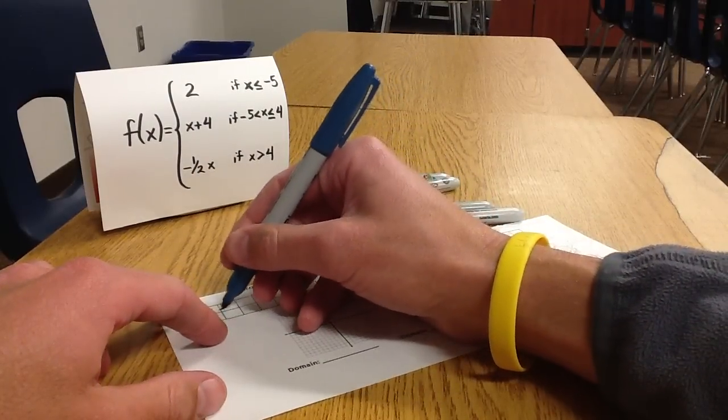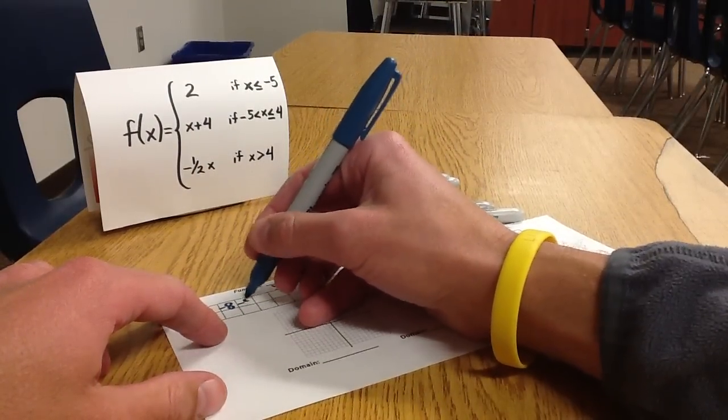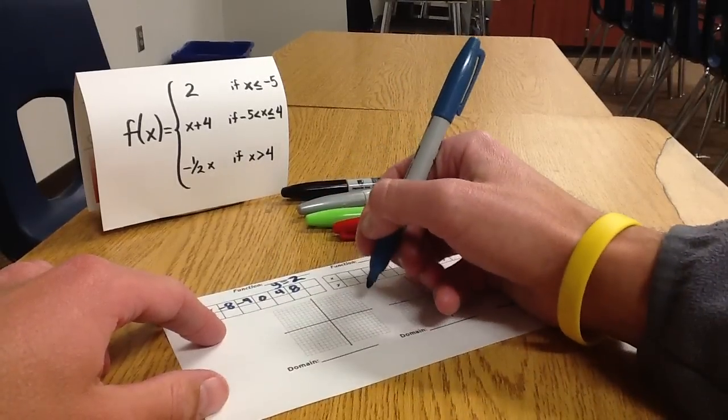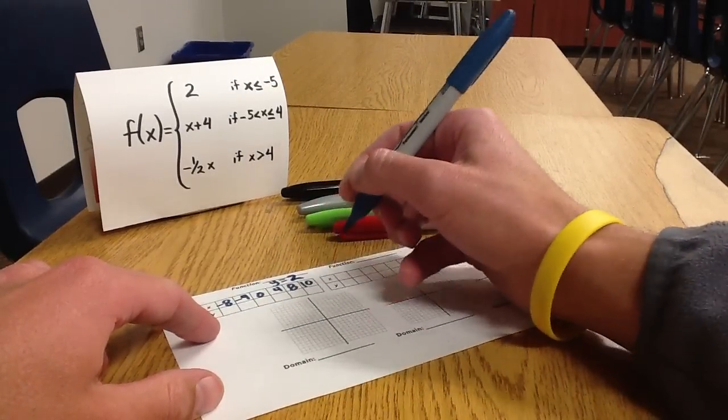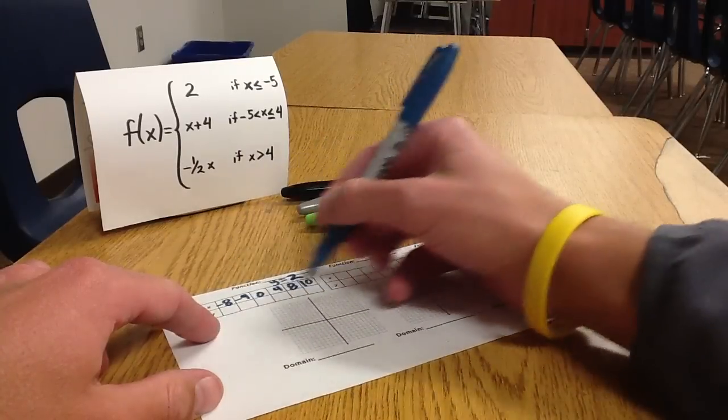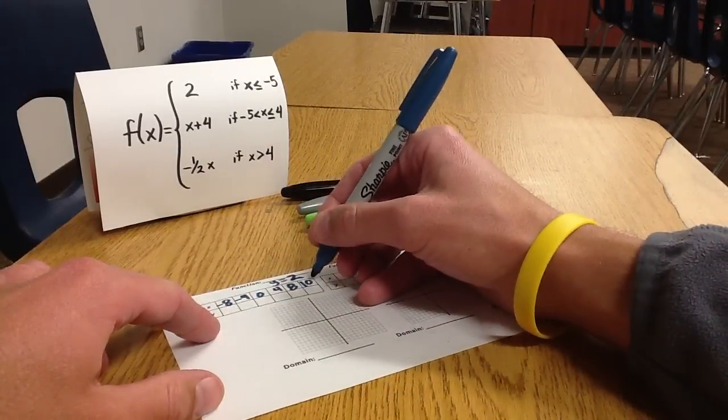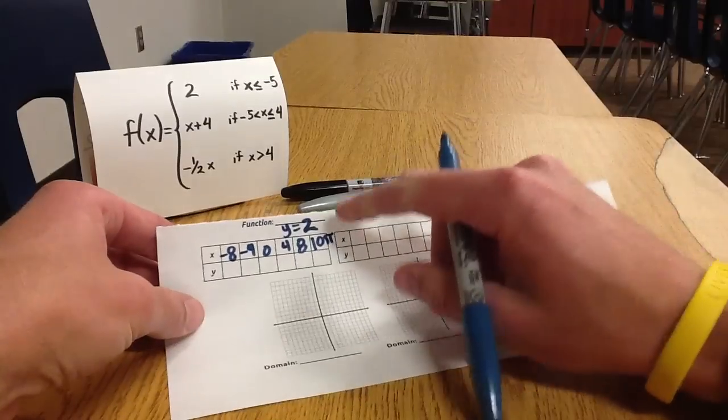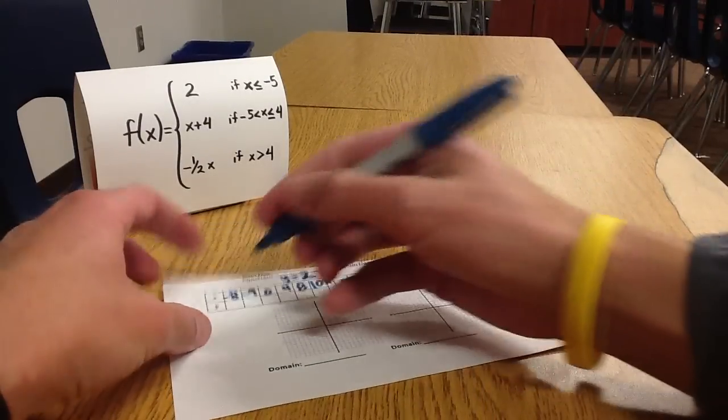I'll go negative 8, negative 4, 0, 4, 8, and just to cap things out on the side of my graph paper here, I'll use a 10. But regardless what I pick, I might as well have chosen 10 pi while I was at it. Regardless what I choose as an input on these, the output that I'm going to get is always going to be 2.